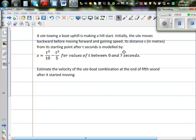A ute towing a boat uphill is making a hill start. Initially the ute moves backwards before moving forward and gaining speed. Its distance s in meters from its starting point after t seconds is modeled by s = t³/10 - t²/5 for values of t between 0 to 7 seconds.